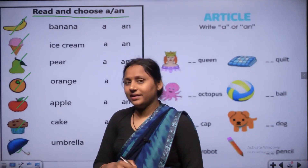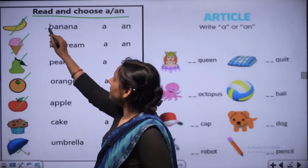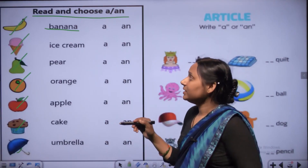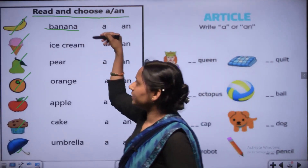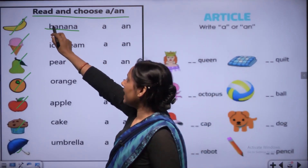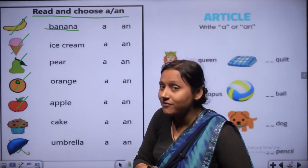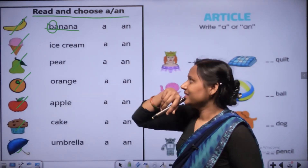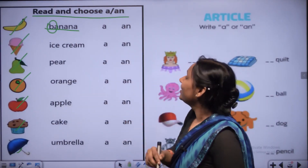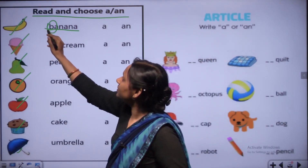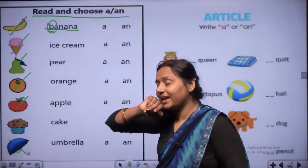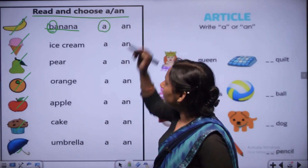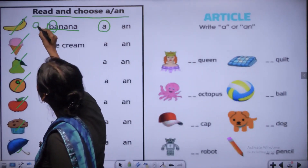This is the picture of a yellow color banana. This one is ice cream. Banana - B, A, N, A, N, A. B is consonant, so we circle A. We use A - a banana. Ice cream - I, C, E, C, R, E, A, M. First letter I is a vowel, so we use AN - an ice cream.